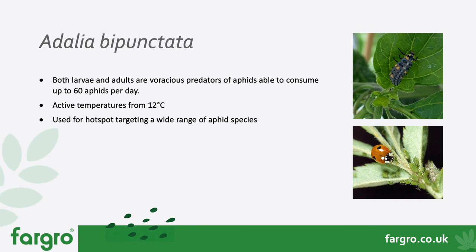Adalia, the two-spotted ladybird, is sold as both larvae and adults. The larvae can often be seen naturally crawling on leaves and feeding on aphids — they are voracious aphid predators, very useful for hotspot targeting of aphid colonies and bringing down populations quickly, giving some curative action. Active from 12°C, they are applied as a loose product across plant foliage.